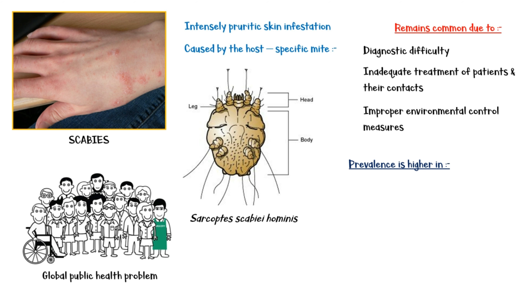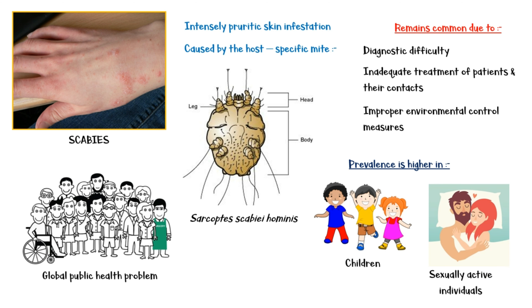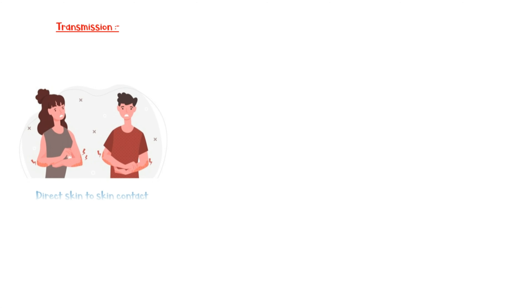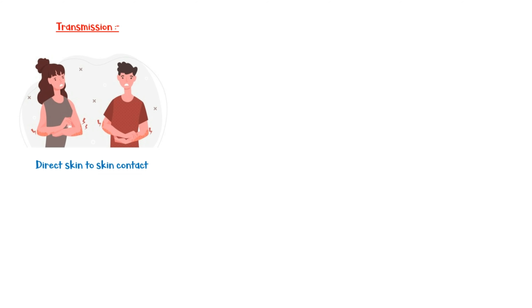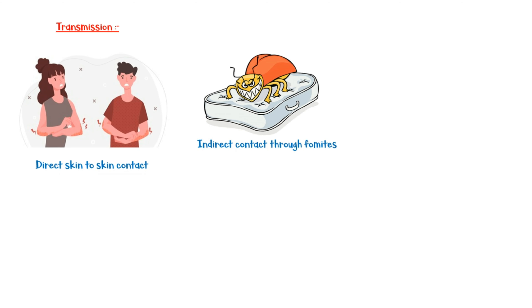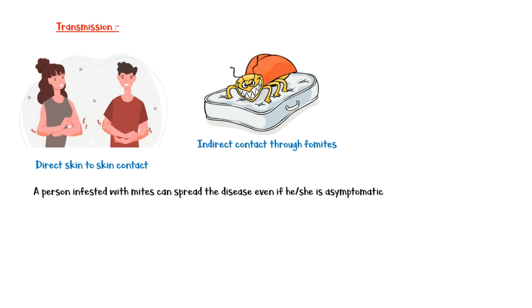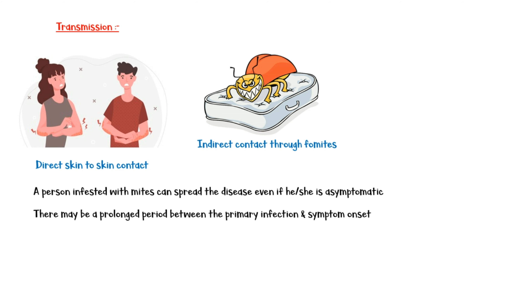Prevalence of scabies is higher in children and sexually active individuals than in other persons. Transmission primarily occurs through direct skin-to-skin contact, and for this reason, it is commonly seen among sexually active individuals. Less frequently, the disease can spread by indirect contact through fomites, such as infested bedding or clothing. A person infested with mites can spread the disease even if he or she is asymptomatic, and there may be a prolonged period between the primary infection and symptom onset.